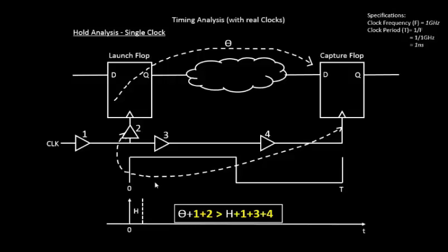the edge plus the combinational delay, and it should be greater than 1 plus 3 plus 4 when the capture flop receives the edge plus the processing time of the capture flop. It's a very simple equation compared to the previous ones that we have seen.